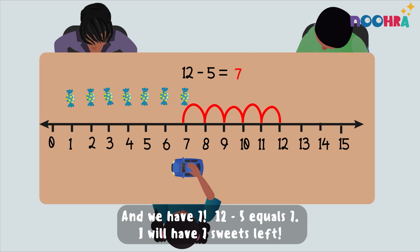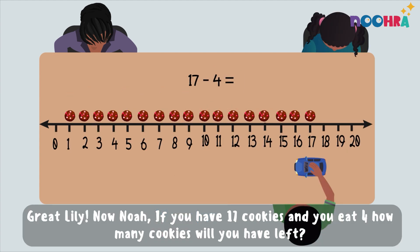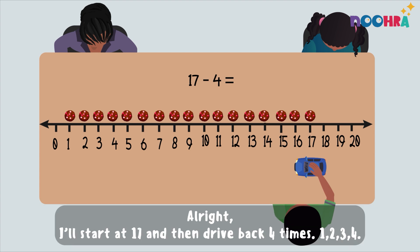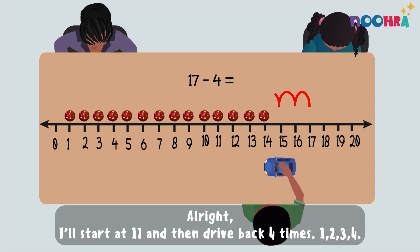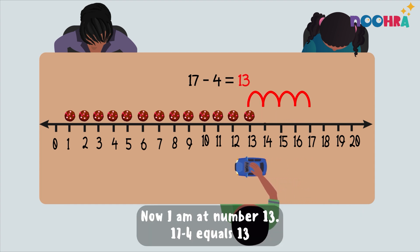Great, Lily! Now Noah, if you have 17 cookies and you eat four, how many cookies will you have left? Alright, I'll start at 17 and then drive back four times: one, two, three, four. Now I am at 13. Seventeen minus four equals thirteen.